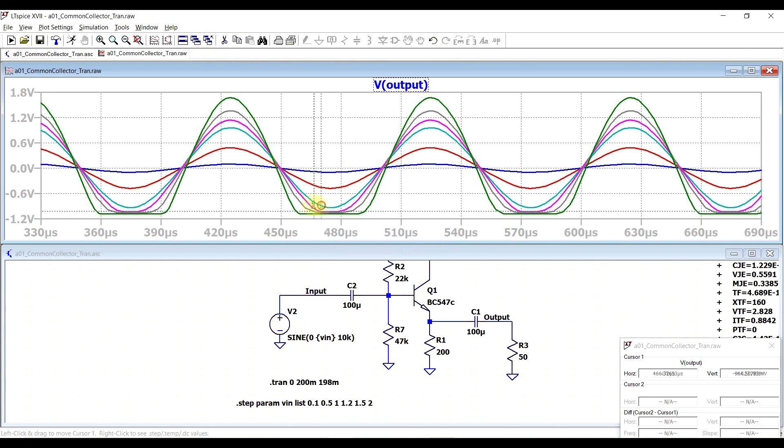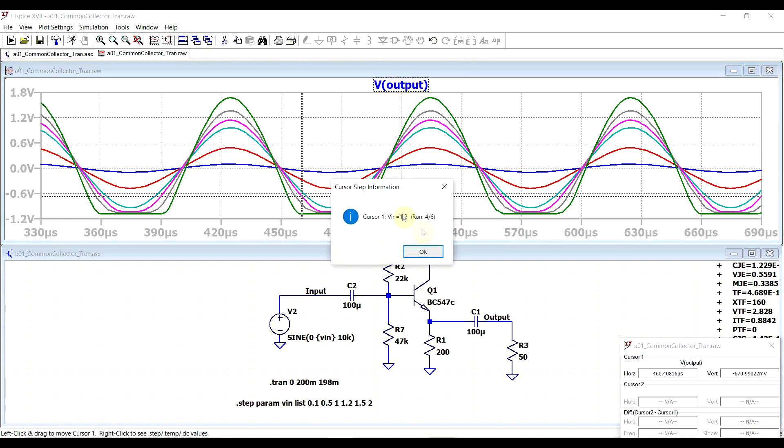But starting with the next signal, the pink one which is the 1.2 volt signal, we run into a bit of trouble on the negative side, so the wave is highly distorted. However, the positive side for all waveforms looks good.